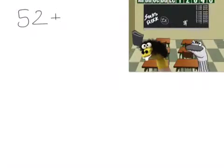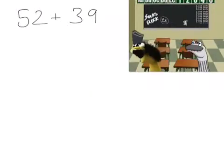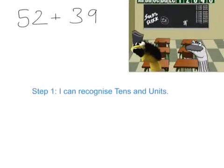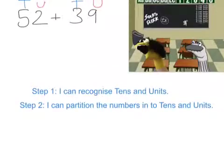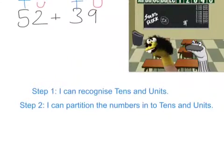So let's try this one. Fifty-two add thirty-nine. Okay. So step one, I can recognise the tens and units. That's the tens, that's the units. Step two, I can partition the numbers into tens and units. Yeah, I've done that.